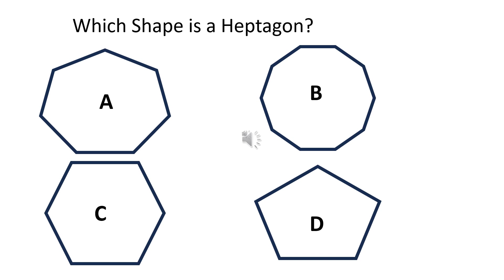Which shape is a hexagon? The right answer is D.